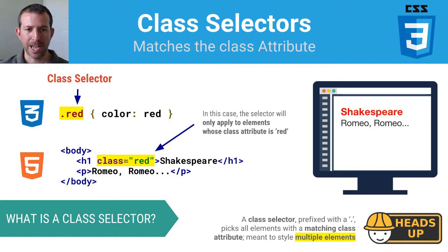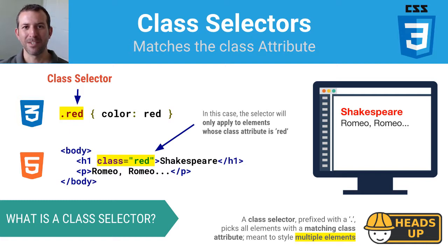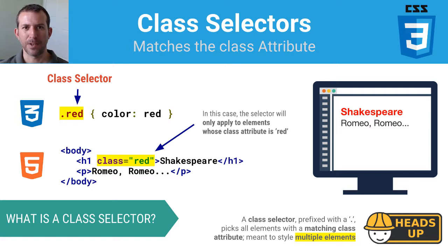Notice how in the opening tag of this H1, I have an attribute called class with the value "red." Then I've written a style rule — notice how it is prefixed with a period, so it says ".red," and then the style declaration: color red. In this way, you can classify elements together. All you have to do is give each element a class value and then create a CSS rule prefixed with a period that styles all of those common elements. Think about the word class — it's like classification or group. If you want to style common things, you're likely going to want to use a class selector.